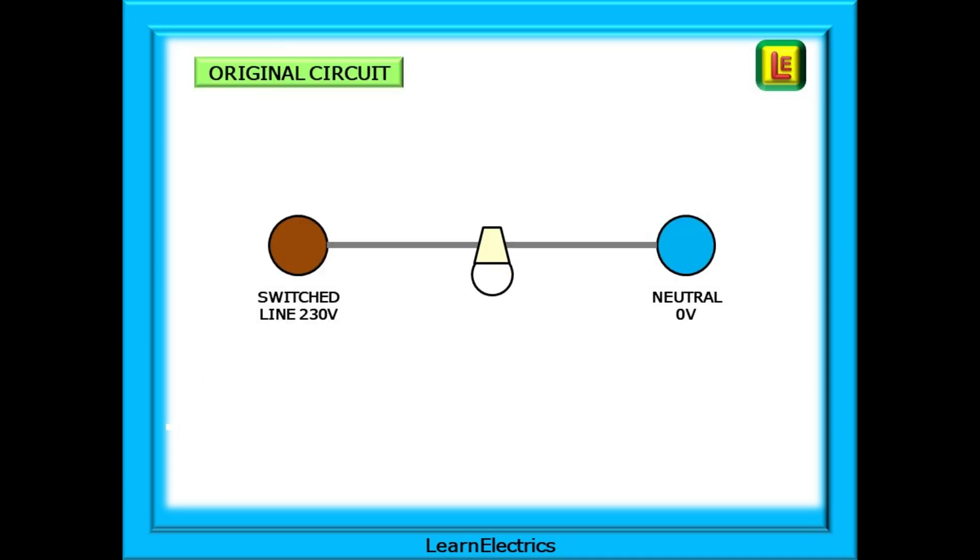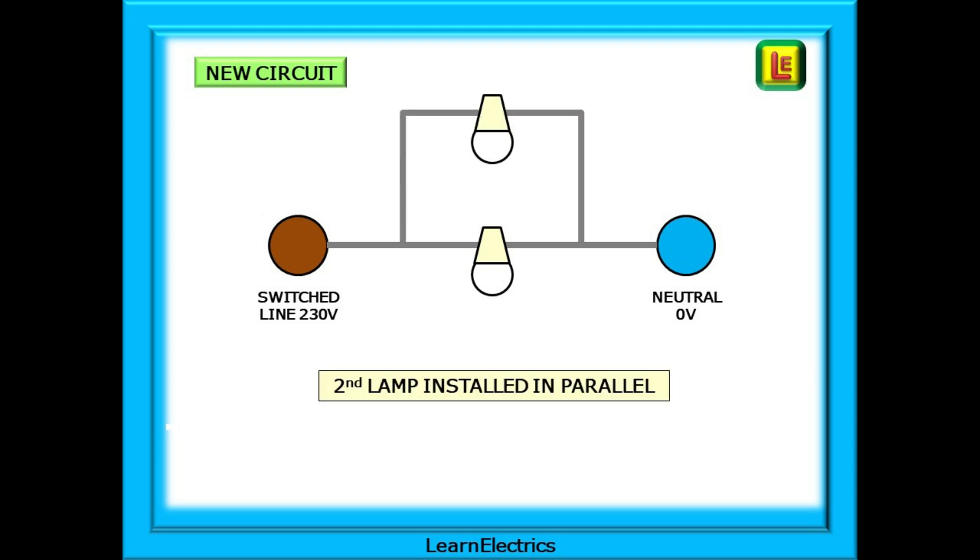What is it that we want to achieve? At the moment we have the 230 volt switched line connecting to the lamp and from the lamp to the neutral. When 230 volts appears at the switched line the lamp will come on. To make a parallel lighting circuit so that both lamps come on at the same time, we need the switched line to be connected at the same point on both lamps and the neutral to be connected to the same point on both. Any voltage on the switched line is the same voltage on both lamps.